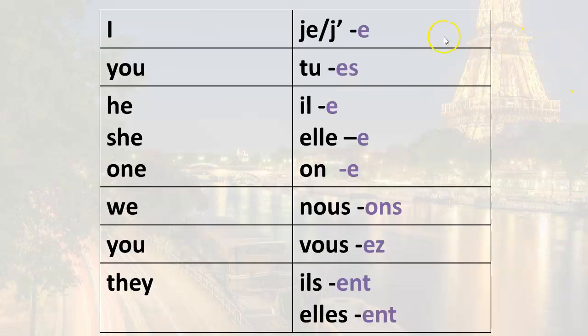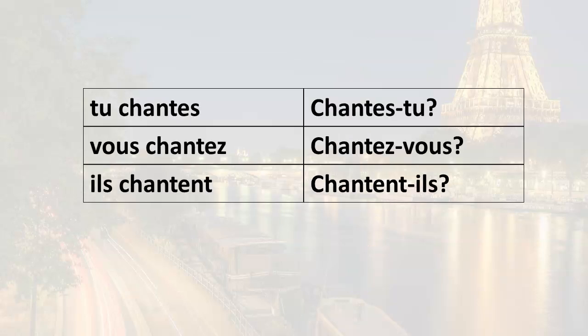So the first thing is: remember your endings. You have to memorize these — there's no way around it. Native speakers just memorize these endings through practice. So the more you practice, the more you will remember the endings.